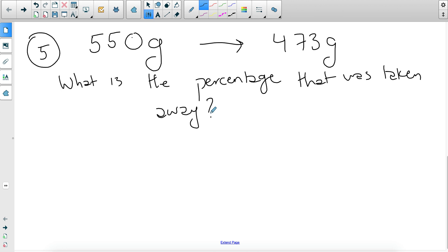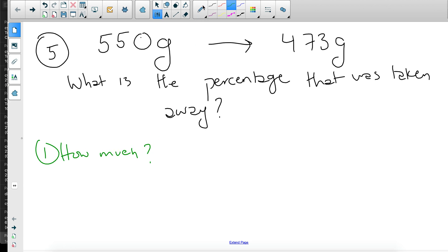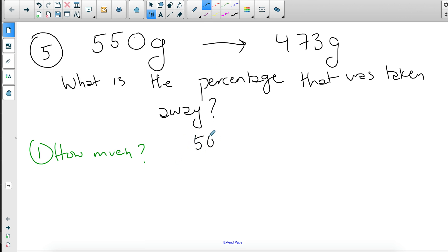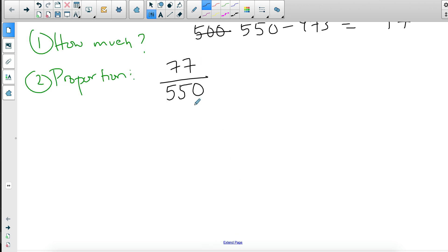And you could answer that by, well, you know how to change things to percentages. You also know how to represent the difference in quantities. Well, let's link those two concepts together. So first you want to ask yourself, how much was taken away? And how much was taken away can easily be calculated by taking 550 minus 473, and that will be 77. Now you're going to represent this as a proportion. And so you took 77 of 550. So that's how many you took. And we know how to change fractions to percentages.